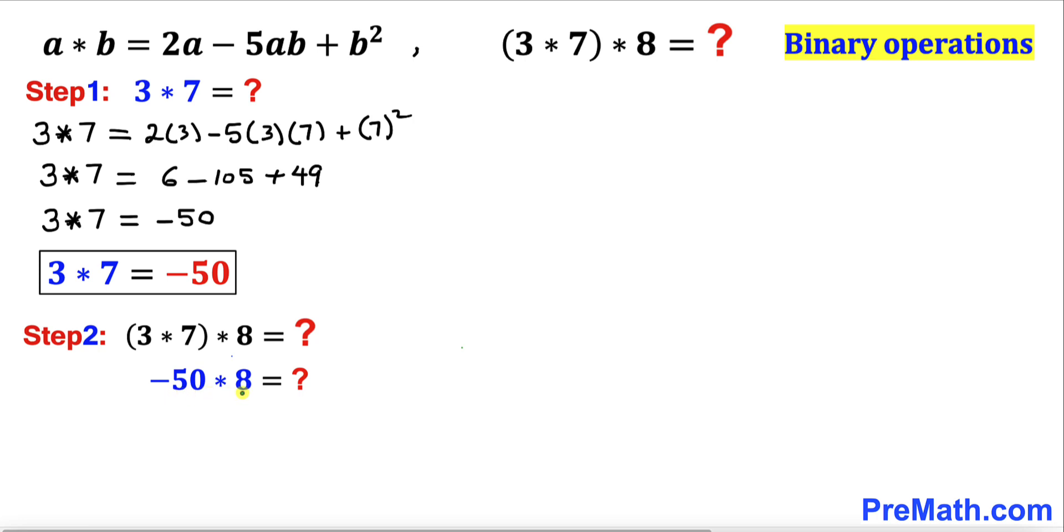Therefore, we are going to find the value of negative 50 star 8. In other words, our a value is negative 50 and b value is 8. And we are going to plug it in on the right hand side.